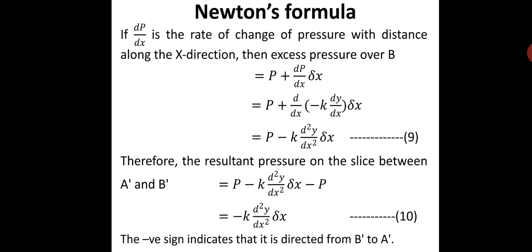Just as displacement varies from point to point, pressure also varies. If p is the pressure, then dp/dx is the rate of change of pressure with distance along the x-direction. The excess pressure acting over section B is given by p plus dp/dx times delta-x. Substituting for p from the previous equation, we get minus K times dy/dx plus — this simplifies to p minus K times d²y/dx² times delta-x — let this be equation 9, representing the excess pressure over section B.